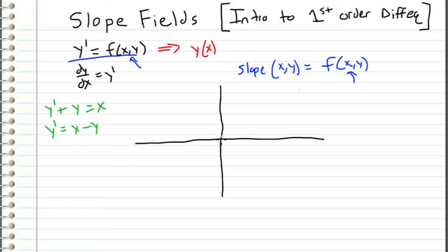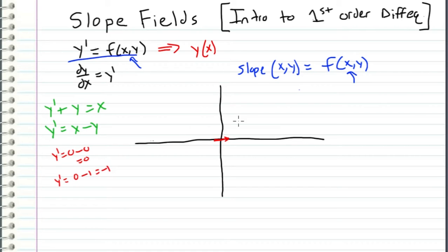At the origin, which is (0, 0), y prime equals 0 minus 0, which is 0 — so we plot a vector with a slope of 0. At the point (0, 1), where x is 0 and y is 1, y prime equals 0 minus 1, which is negative 1 — so we have a negative slope there. Continuing along the y-axis where x is 0, the slope vector just decreases, and as we come down the y-axis it looks like a mirror image.